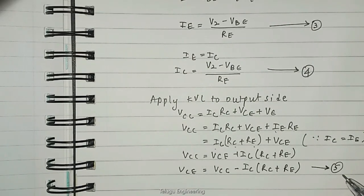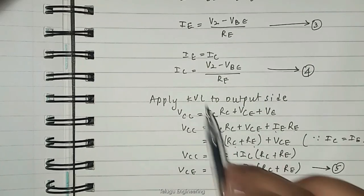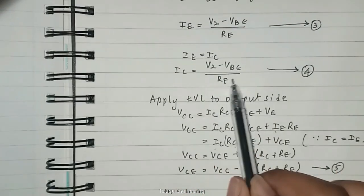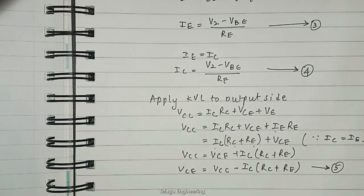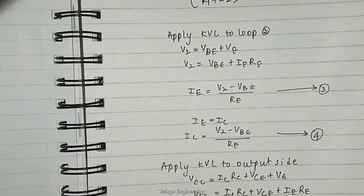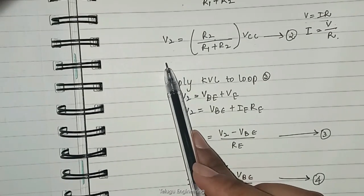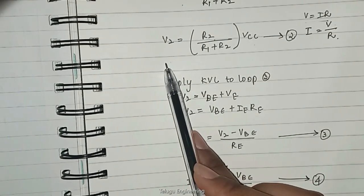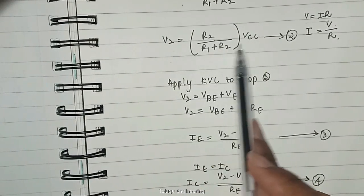The circuit provides good stabilization through the resistor RE, and it is explained using equation four: IC equals V2 minus VBE by RE. Also, in the above expression, voltage V2 across R2 resistance is independent of IC and is given as V2 equals R2 by R1 plus R2 into VCC.